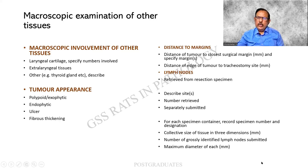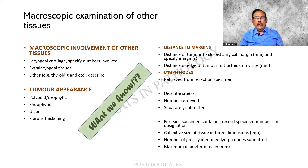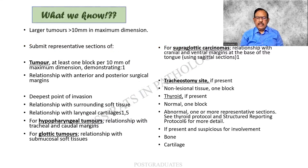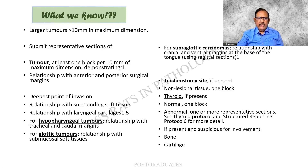For each specimen container, number and perform the various steps. If it is a small tumor it may be straightforward, but if larger than 10 millimeters then multiple slices will have to be given. Sometimes it is quite long. The relationship with the trachea and the caudal margins is very important for both surgical clearance and function. For glottic and supraglottic carcinomas, the relationship to the tongue matters, and the tracheostomy site should be mentioned.